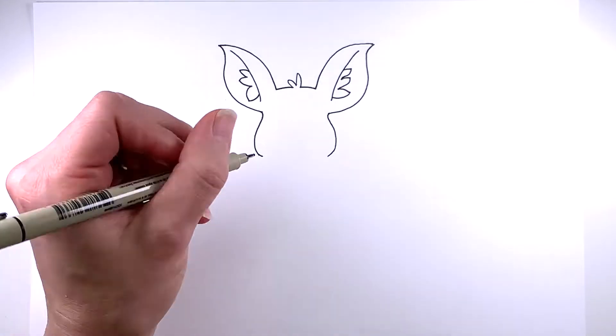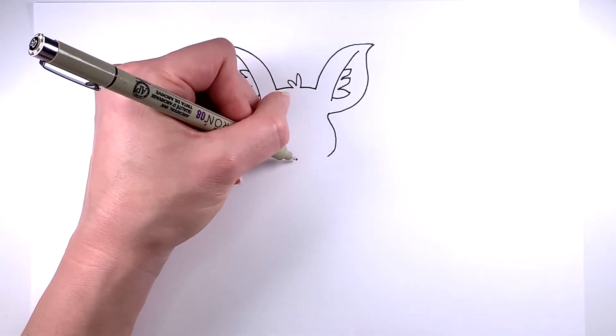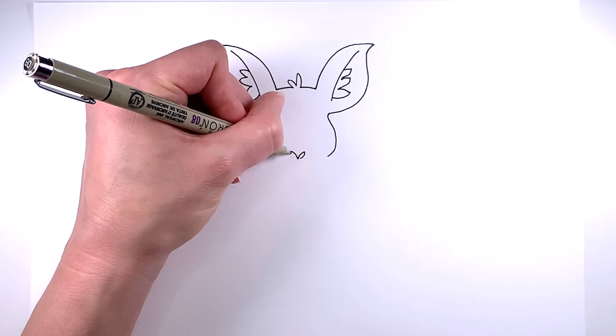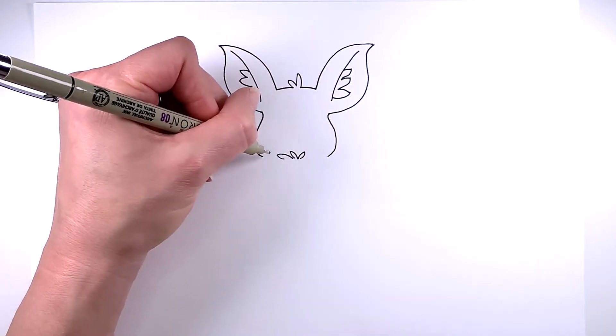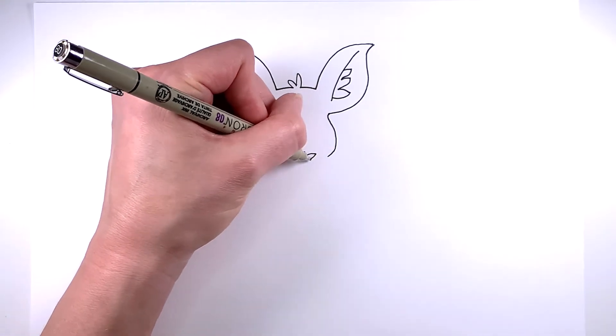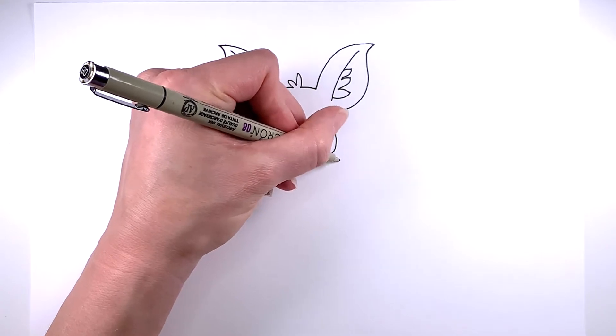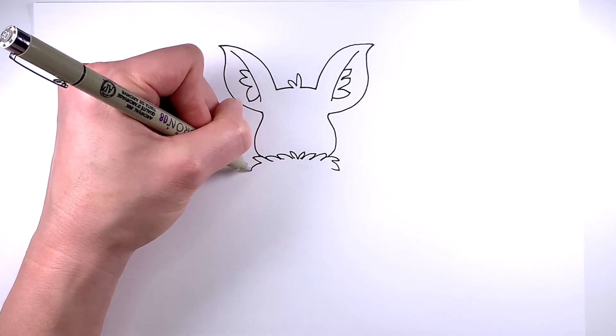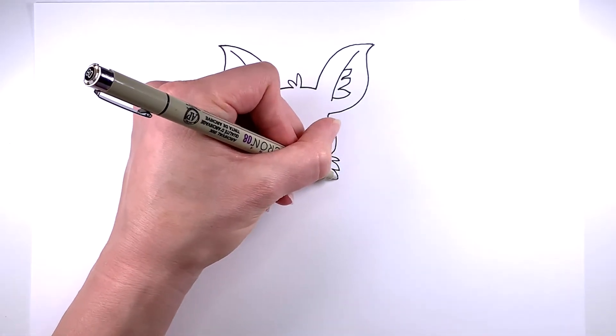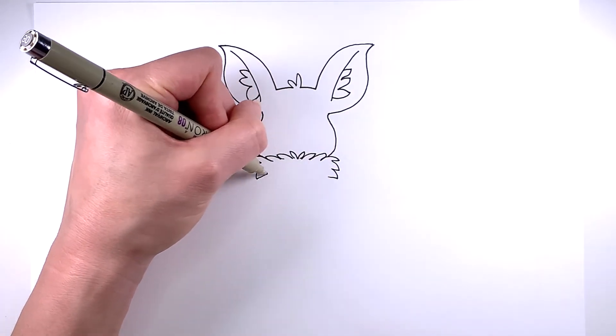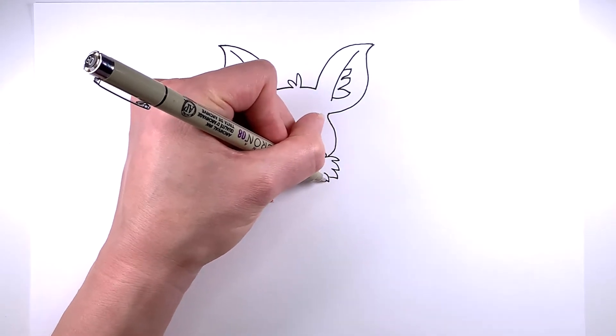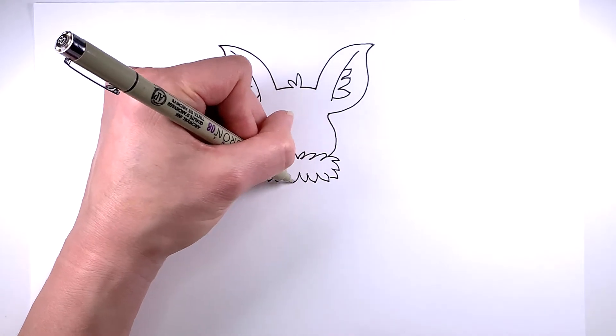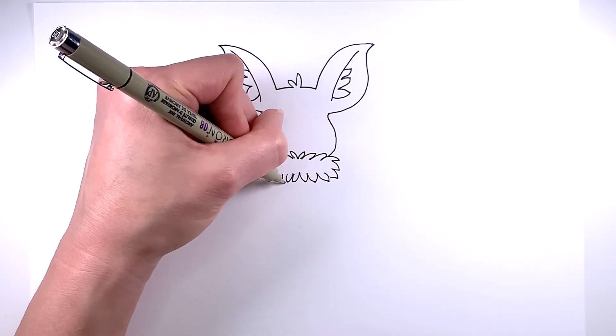Now we're going to draw this cute little furry collar around his neck and just kind of go around just mirroring on each side. Just some little tufts here and there. There we go.